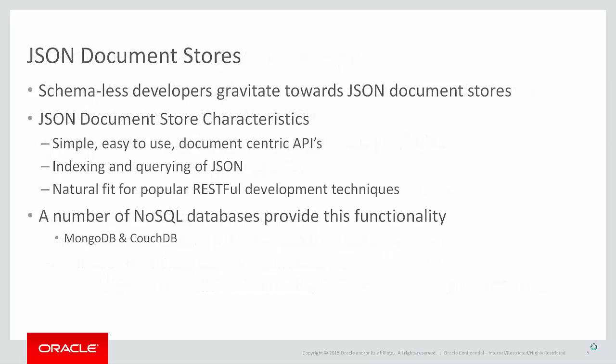Once the decision has been made to adopt schema-less development and persist data as JSON documents, there is a tendency to gravitate towards using a NoSQL-style document store. The characteristics of a typical NoSQL document store include: it is very simple and easy to download and install; the developer does not need support from a dedicated DBA; they provide limited support for indexing and querying JSON documents; and they provide simple document-centric APIs that map nicely to the REST approach to application development.